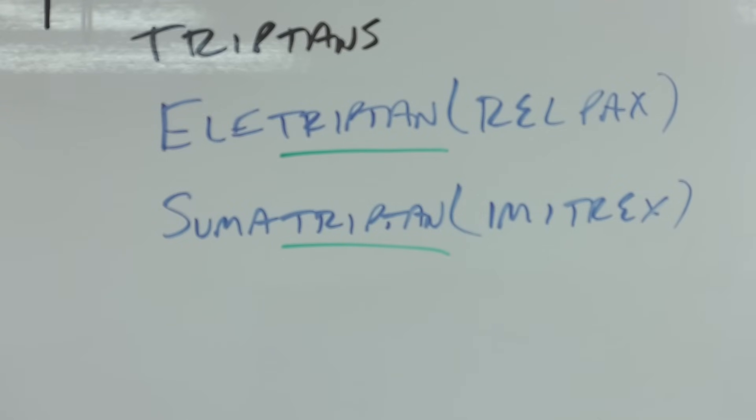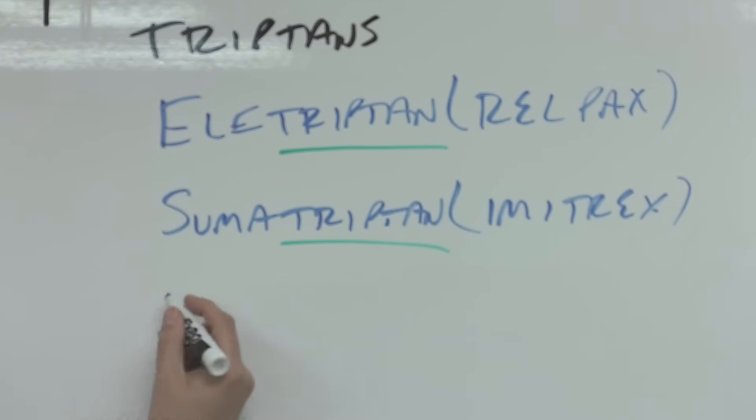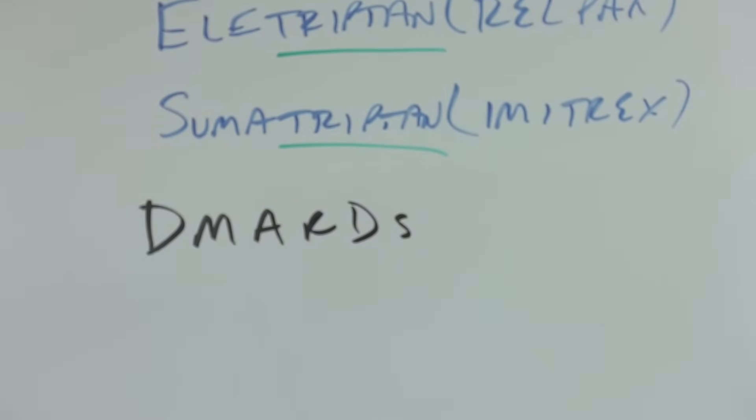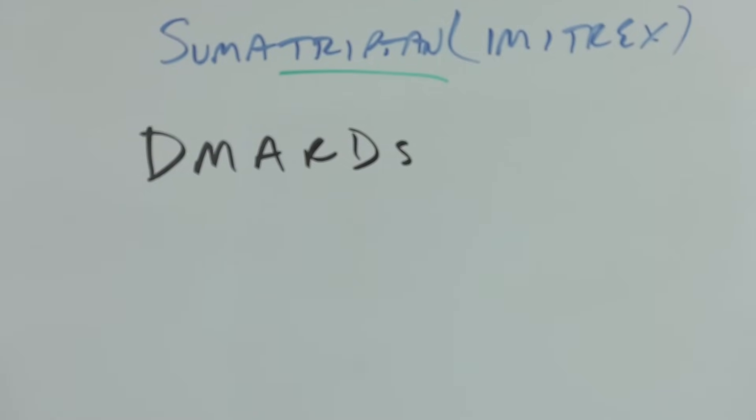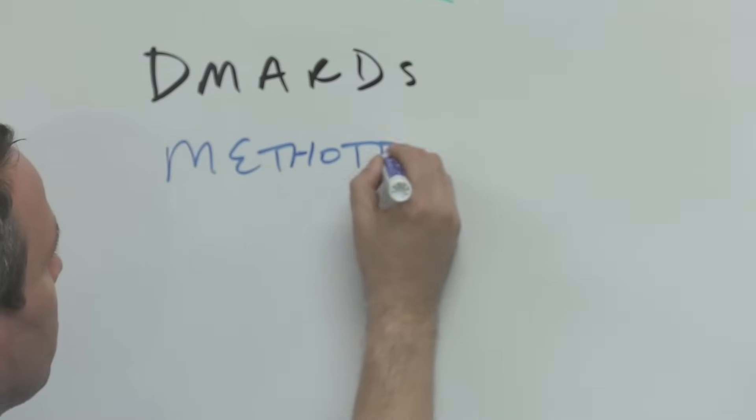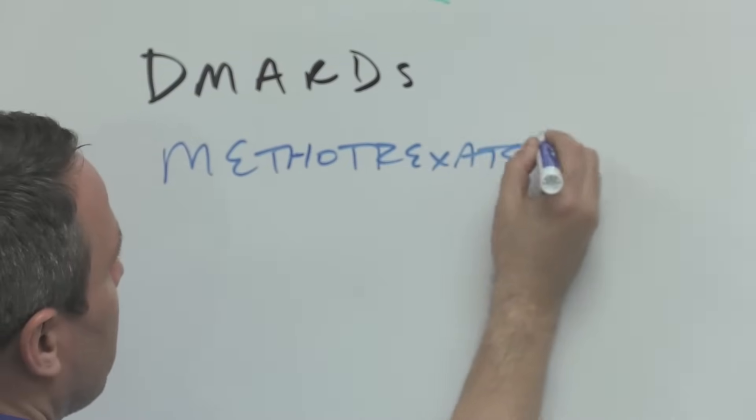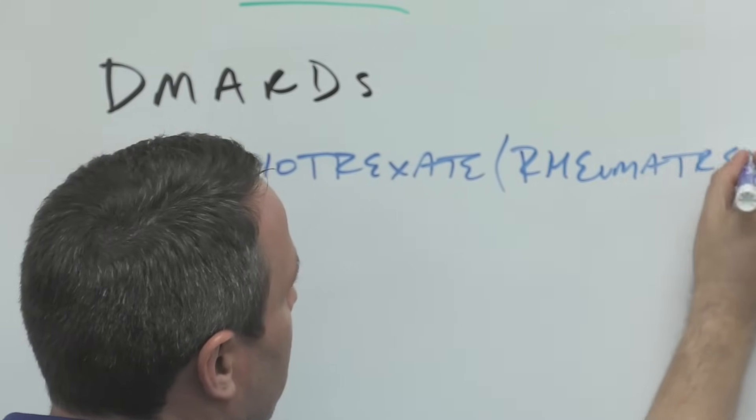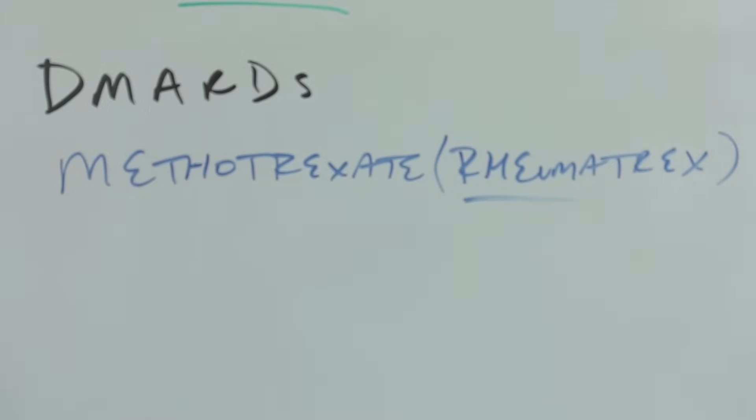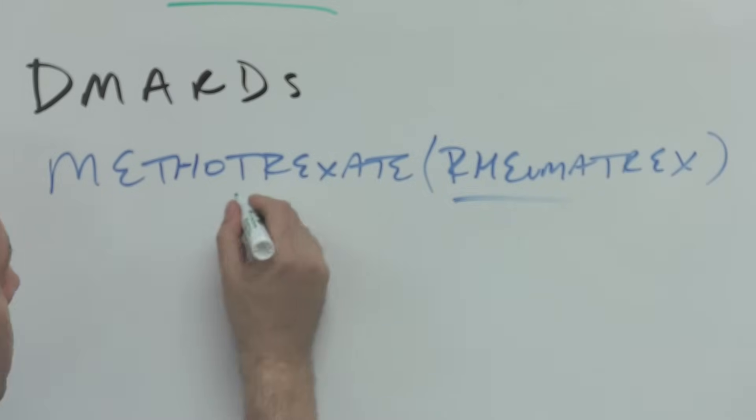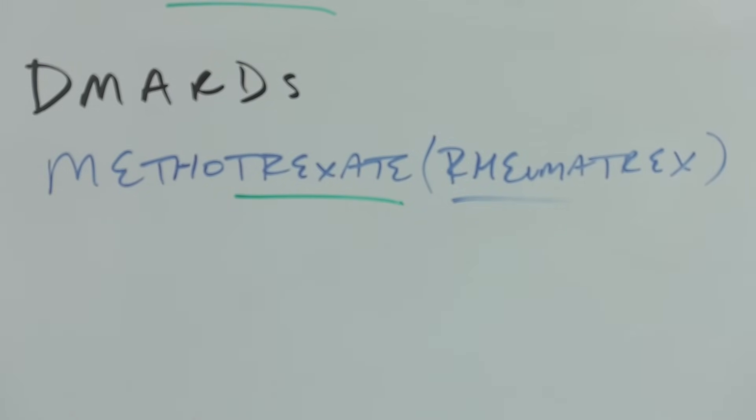Then from there we're going to go to what are called the DMARDs. And DMARDs are disease-modifying anti-rheumatic drugs, and I'll show you why I'm going to put this not in alphabetical order. So methotrexate, it's Rheumatrex because it's for rheumatoid arthritis, and methotrexate has the trexate stem. And this is a non-biologic.